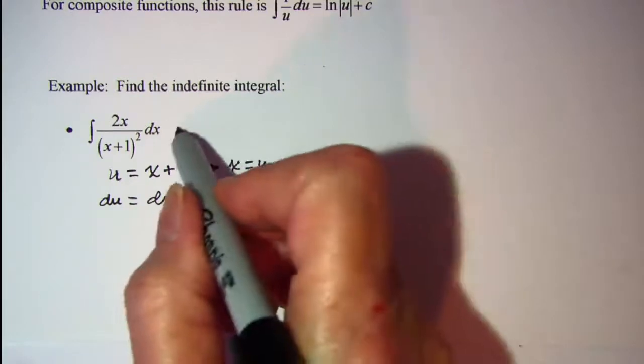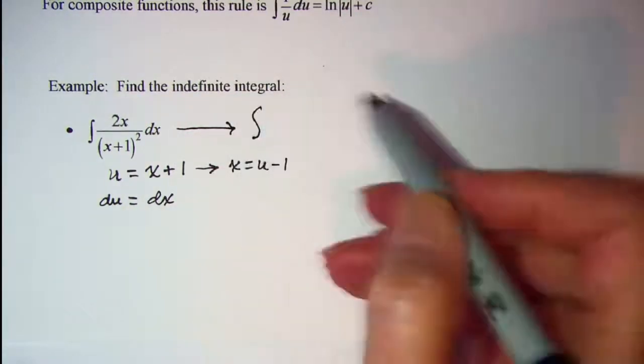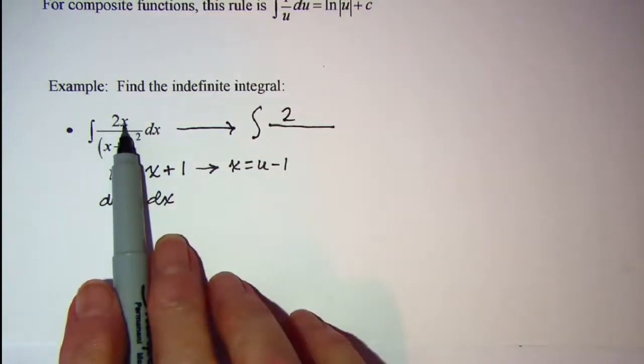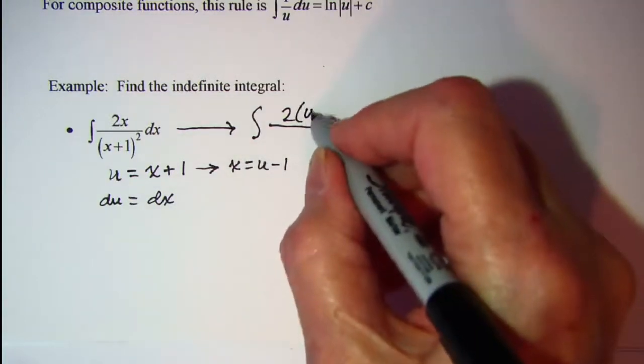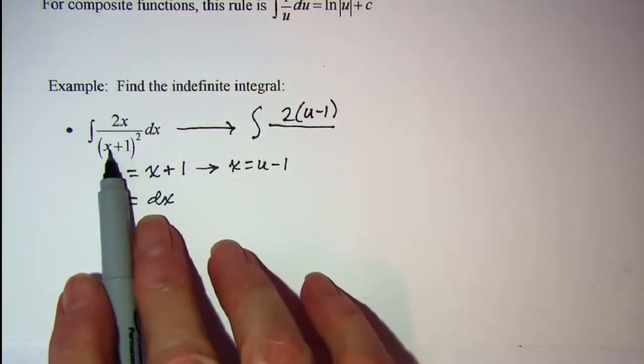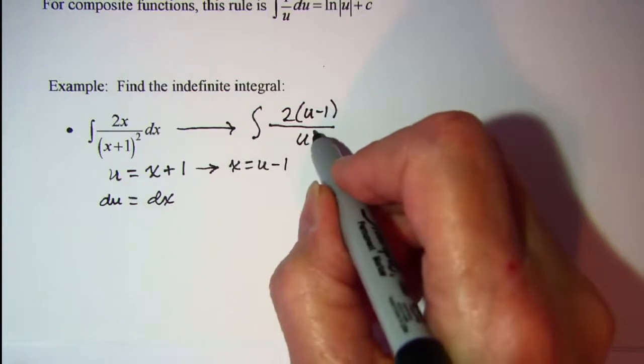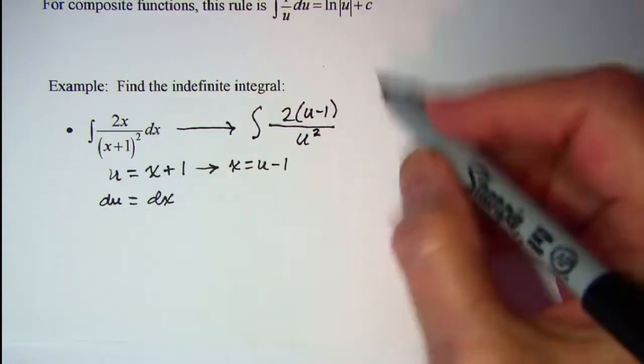Let's do some substitutions then. This problem becomes the integral of 2, and then in place of x I'm going to put u minus 1. And x plus 1 is u, so in the bottom I have u squared, and then in place of dx I'll put du.